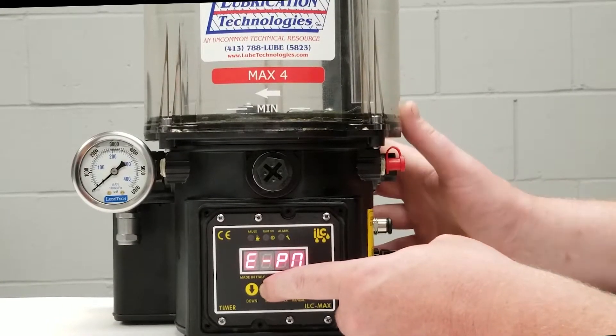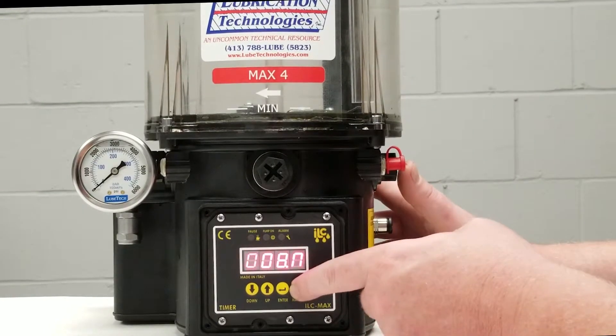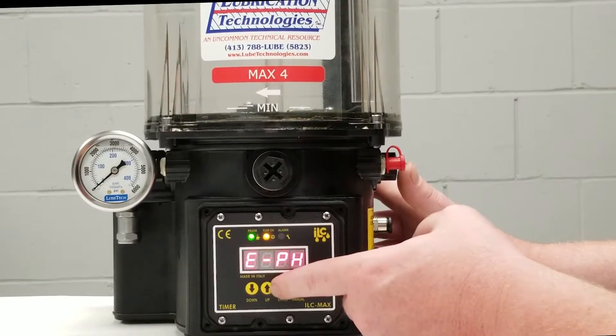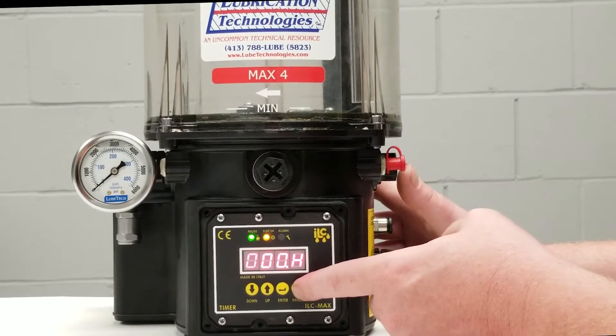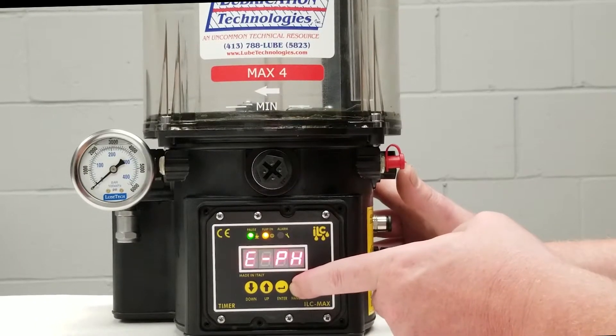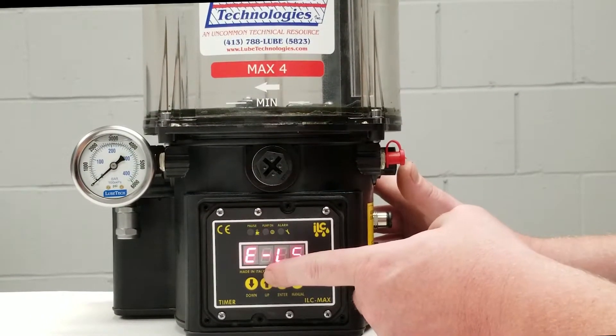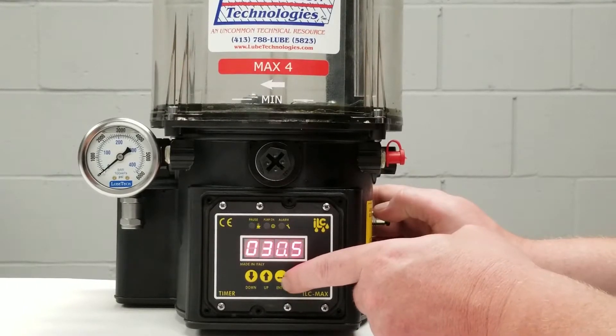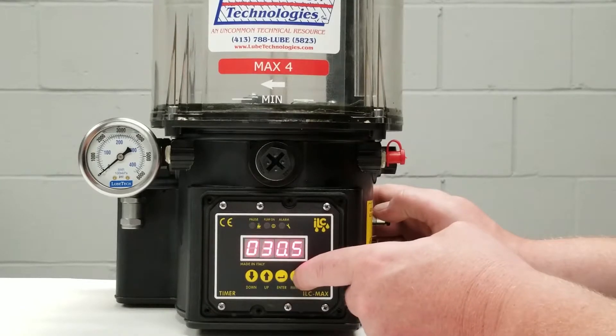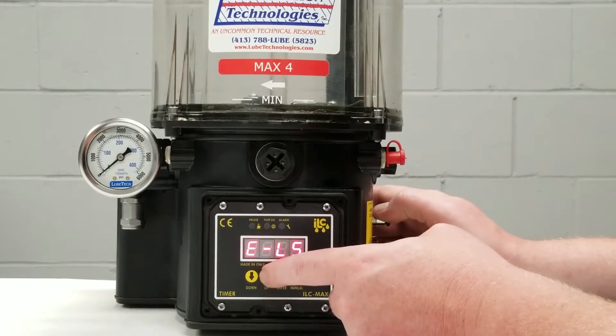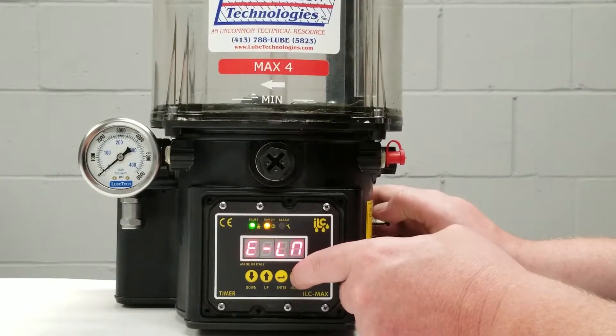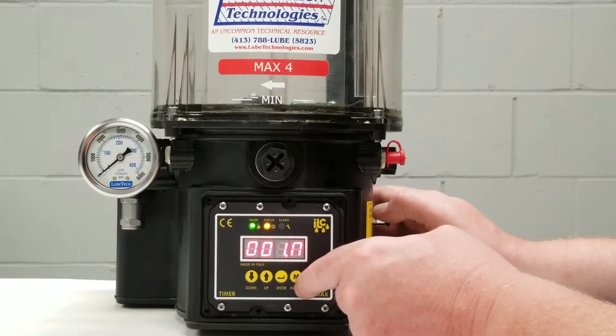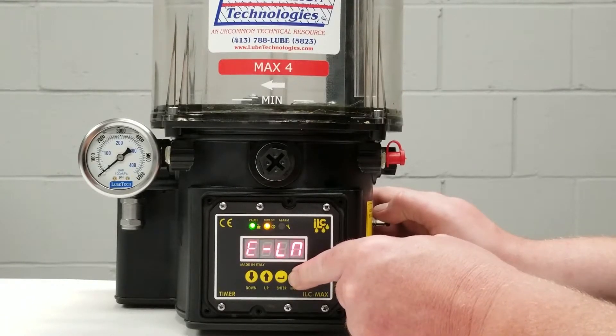Once we're there we're going to go ahead and press our M button and then we're going to press the up key. E-PN would be my pause time in minutes which is eight minutes. E-PH would be my pause time in hours which we have no hours programmed into this pump and go back out to the programming mode. E-LS, this is my work time in seconds. E-LN is our work time in minutes. This is our work time in seconds as you can see we have 30.5 seconds on the screen. We're going to leave that on there. So we're going to go ahead and we're going to add one minute to this cycle time. We're going to come out to the programming mode.